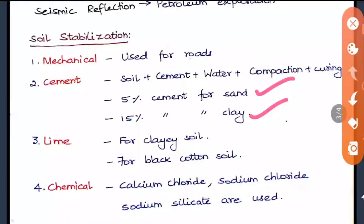The lime stabilization method is specifically used for clayey and black cotton soils; it cannot be used for sandy soils. Hydrated lime is used here. In this method, the liquid limit decreases, the plastic limit increases, and the plasticity index of the soil decreases.